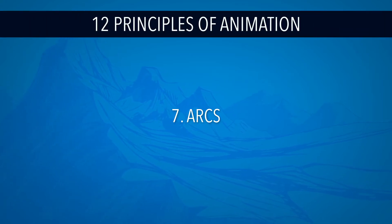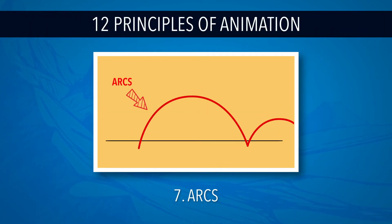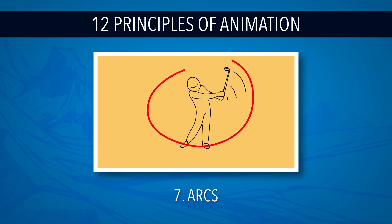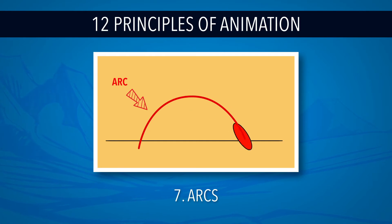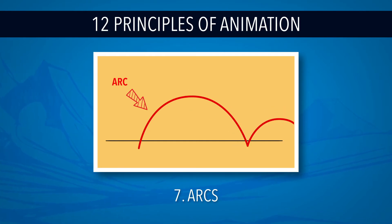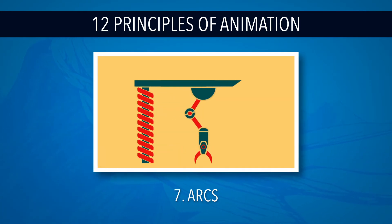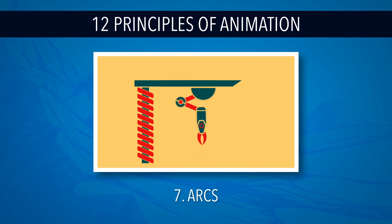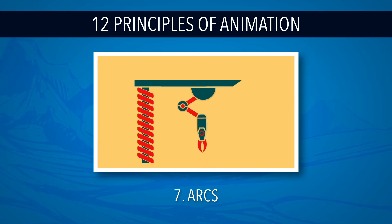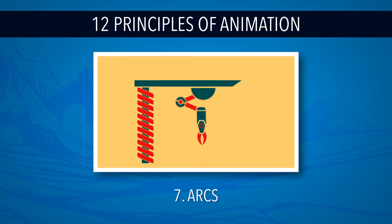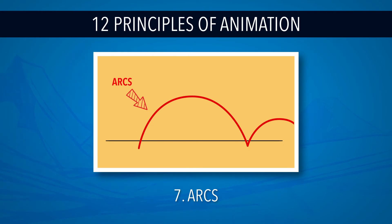Number seven: arcs. Most natural action tends to follow arcs, and animation should follow this principle for greater realism. The bouncing ball will follow an arc trajectory instead of straight lines. One of the few things that does not move in arcs is robots or mechanical objects — they tend to move in straight lines — but almost all natural movement follows arcs.